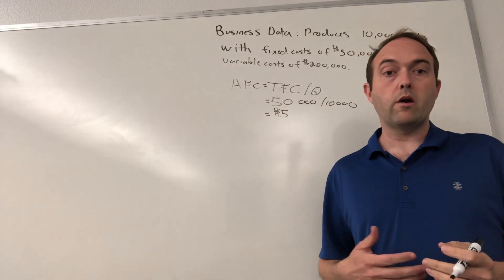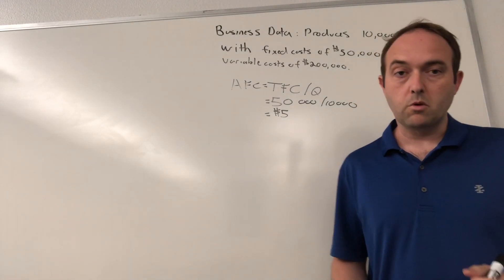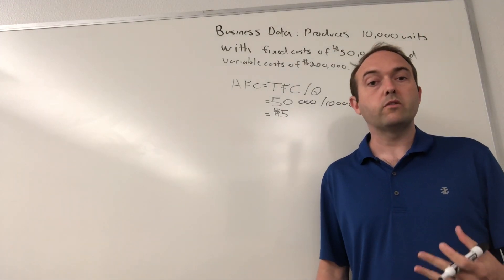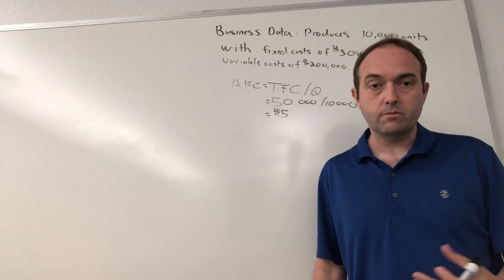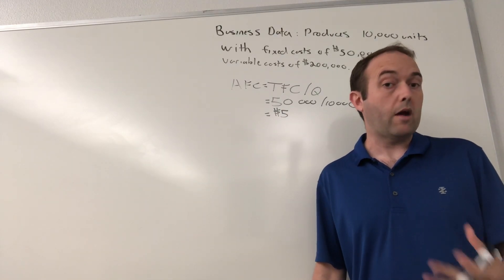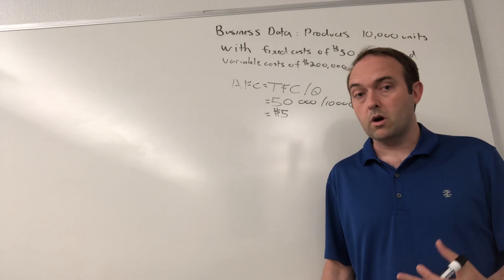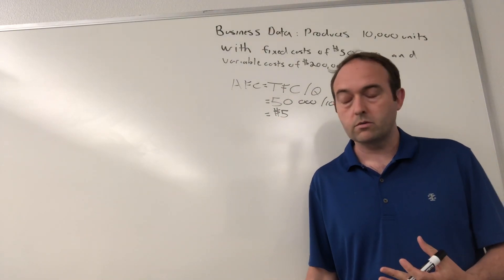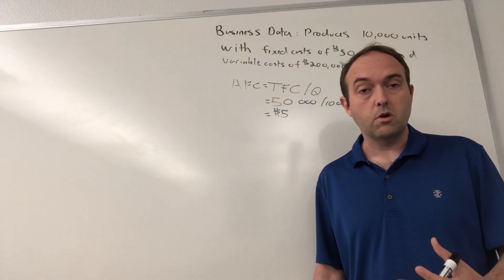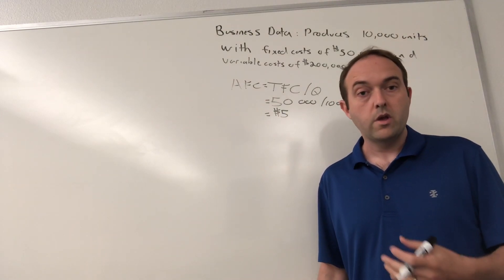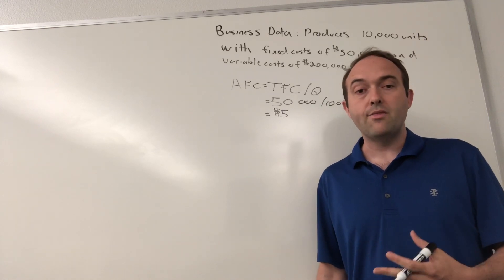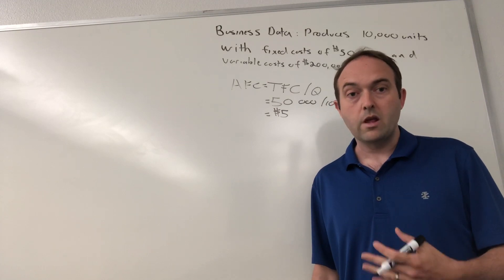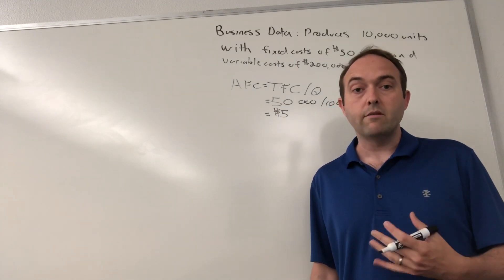Number two calculation is the average variable cost. The process for calculating average variable cost, or AVC, is very similar to average fixed cost. AVC equals the total variable cost divided by the quantity produced. In our data, we've got total variable cost equal to $200,000. If our units produced is 10,000 units, take that $200,000, divide it by 10,000, and that will give us our AVC.